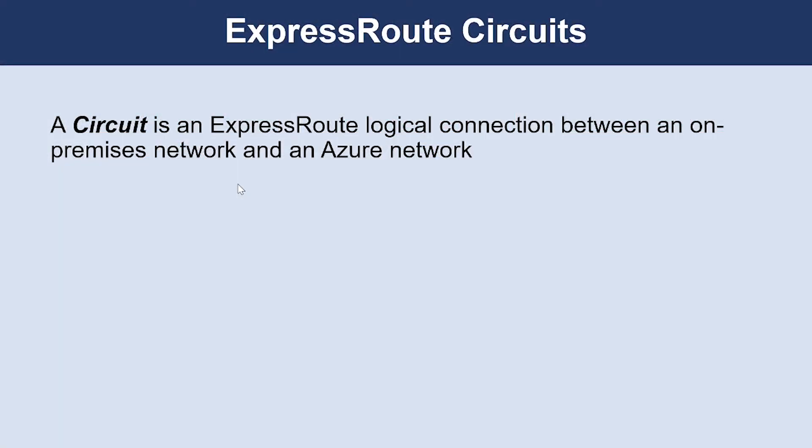Let's talk about ExpressRoute circuits. With ExpressRoute, the logical connection between your on-premises network and your Azure network is called a circuit. You configure traffic management and routing in ExpressRoute by using circuits. You can have multiple circuits, which exist across various regions. ExpressRoute circuits also support connections through many connectivity providers, and each circuit has multiple routing domains and peering associated with it.